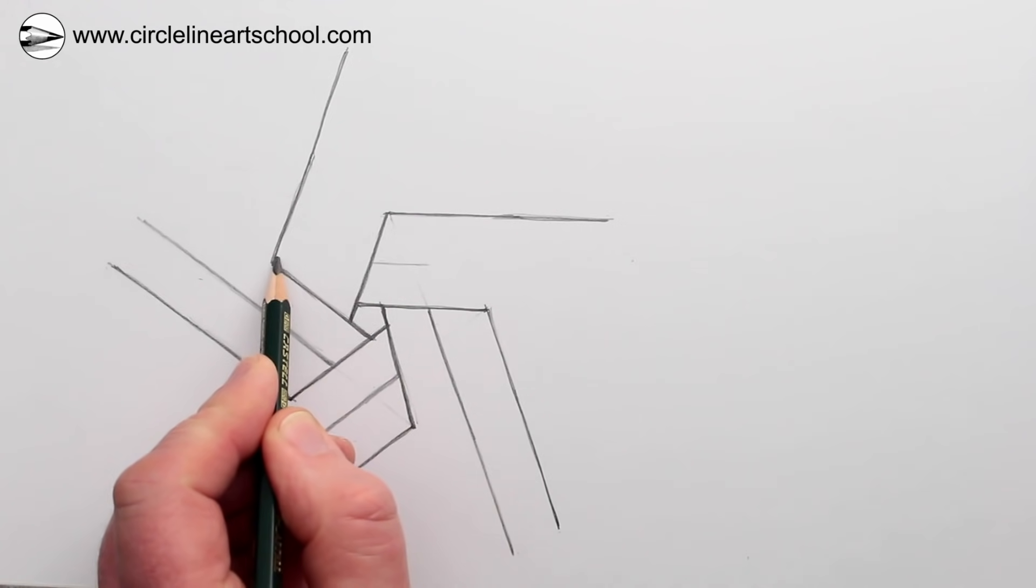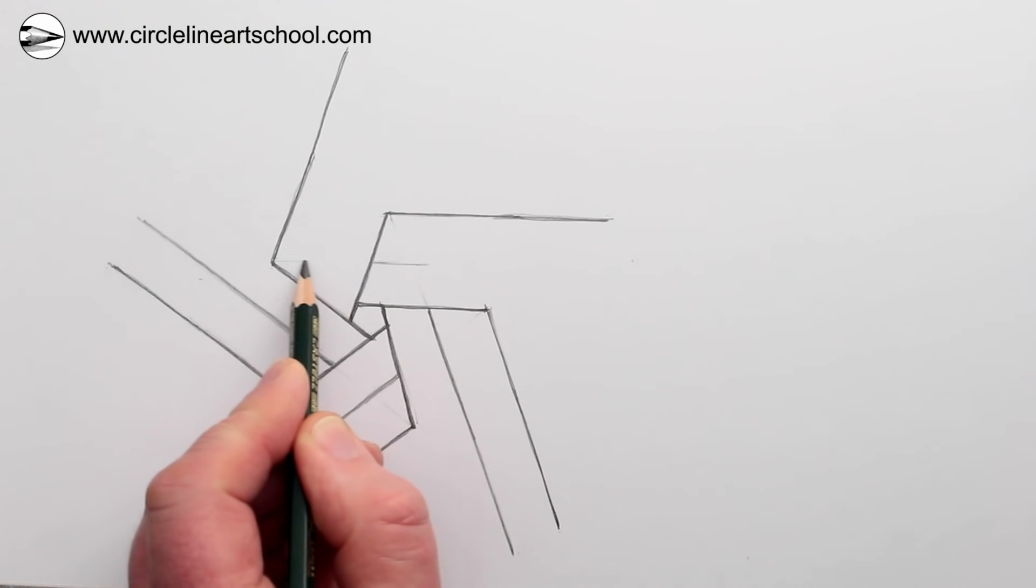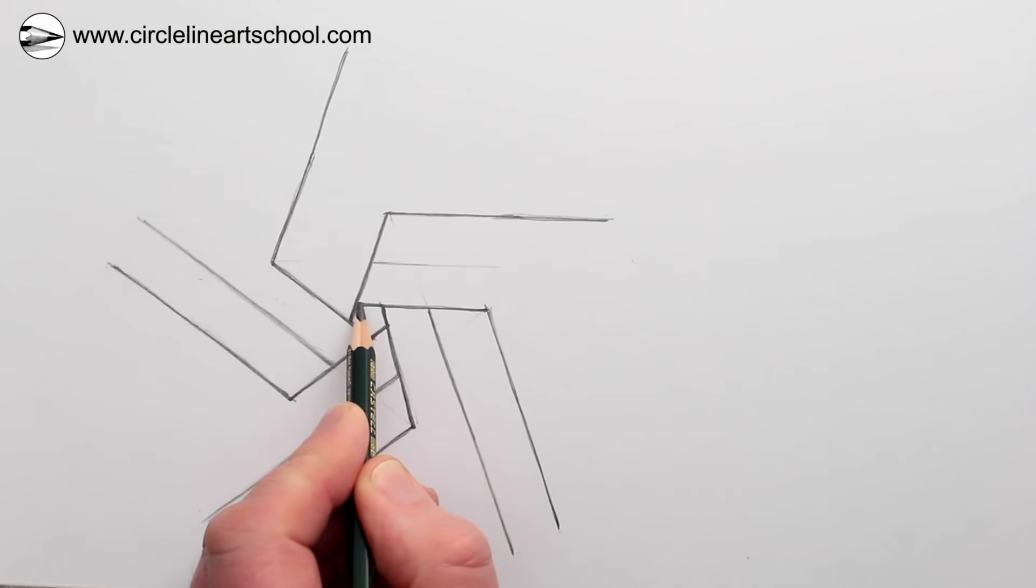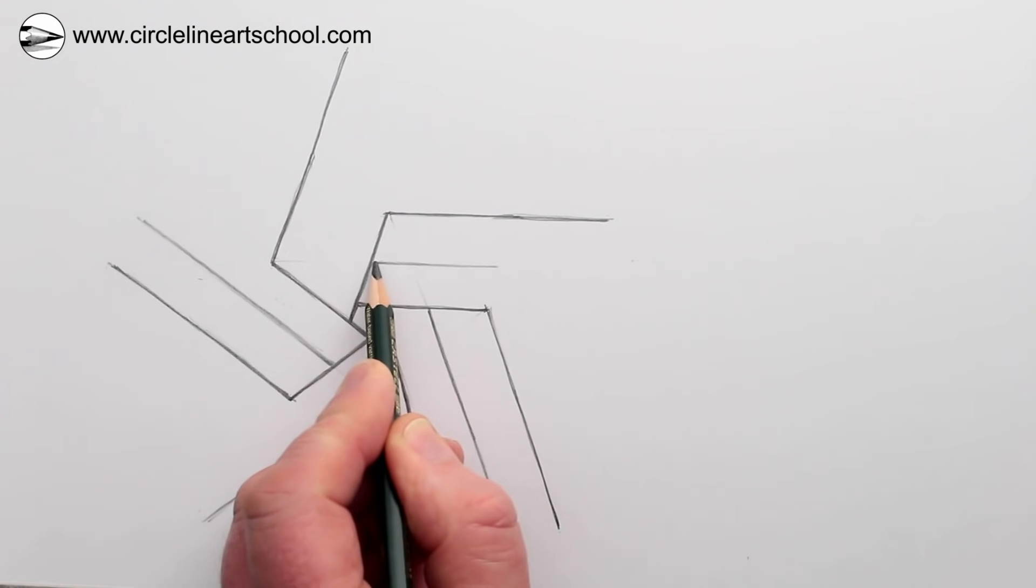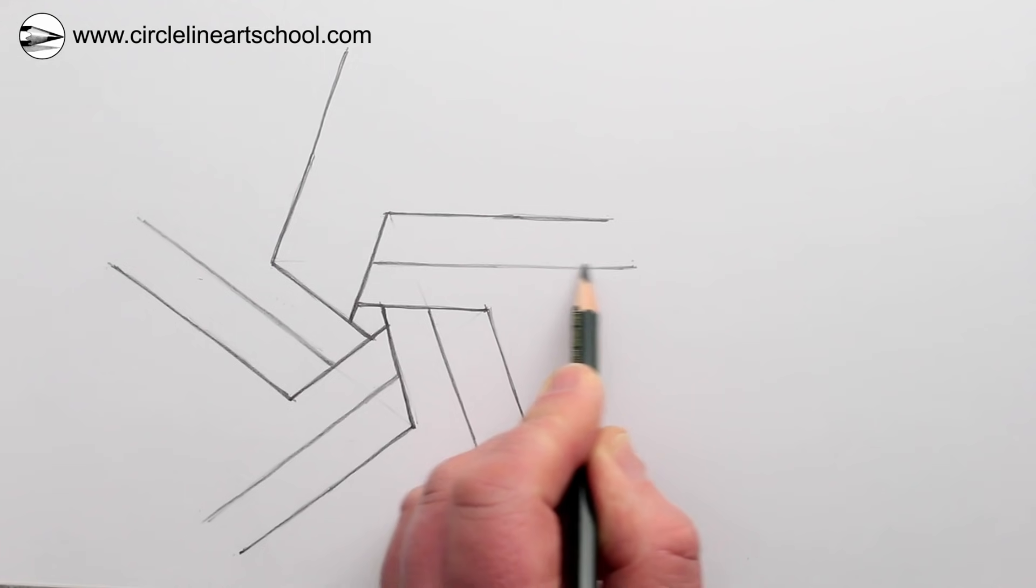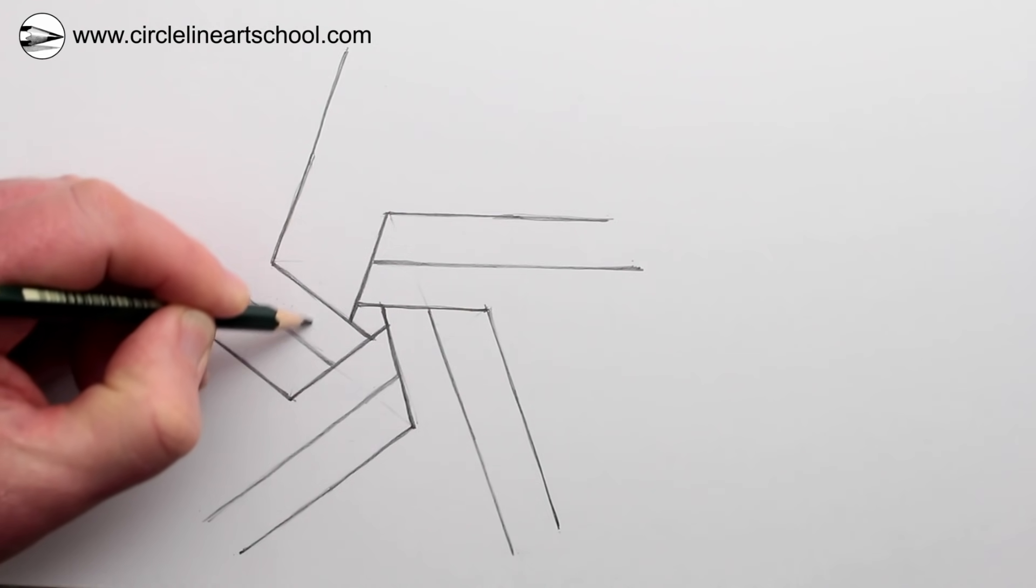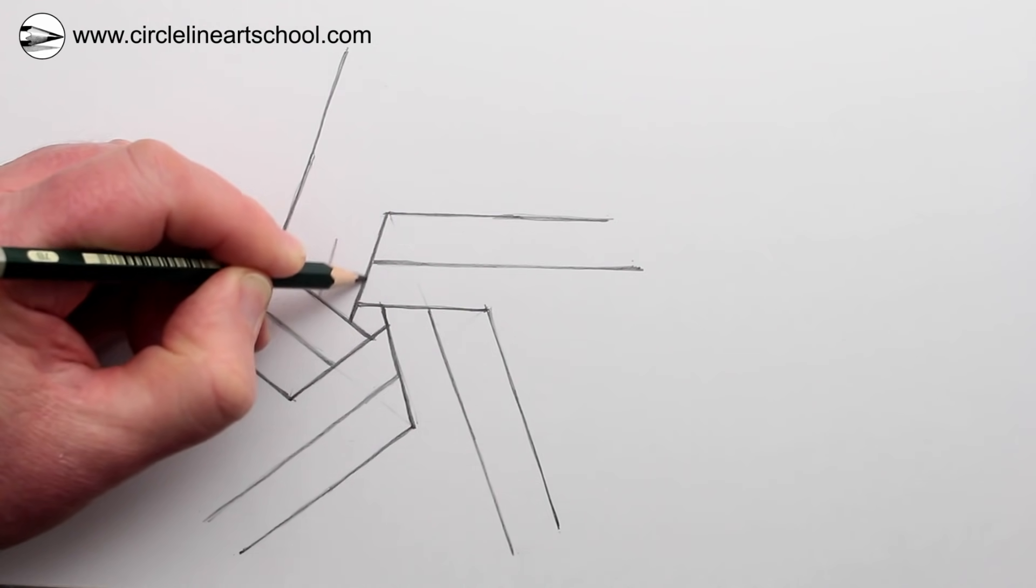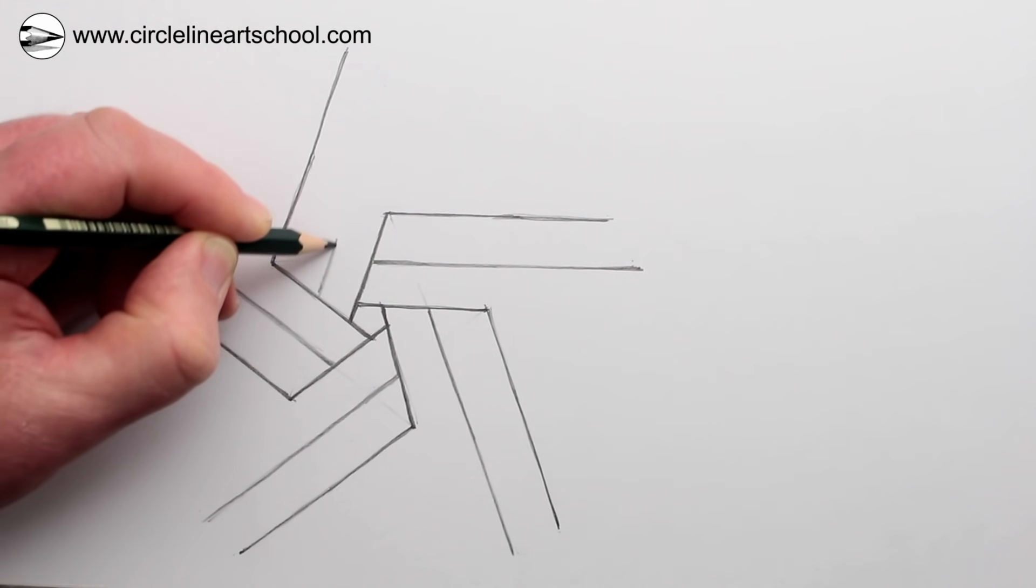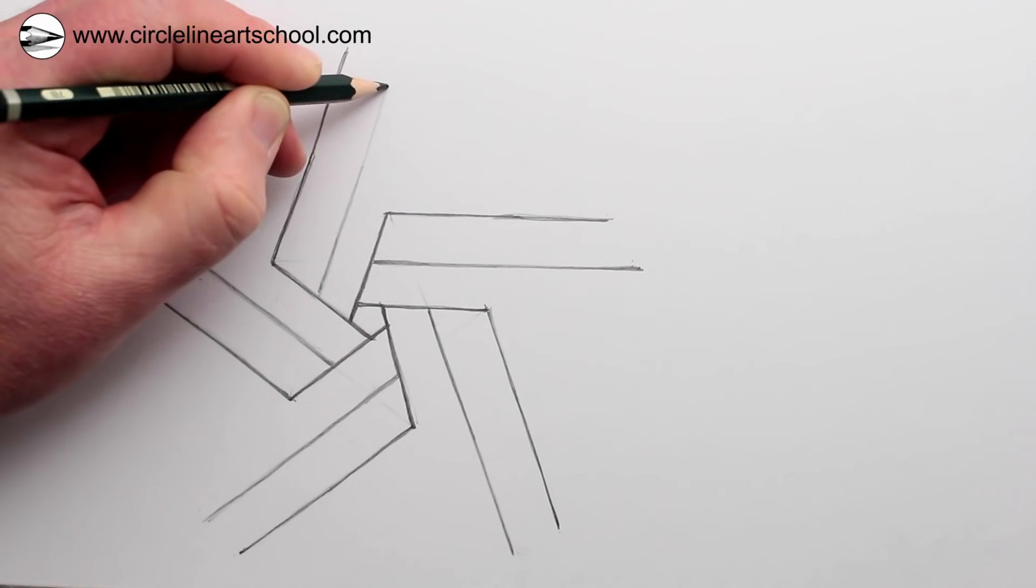So again, the bent line going along halfway between the two lines that we've got, and then the parallel line going along, which is a little bit longer than the line that is next to it. Now there's another one here, so again lining it up with the corner bent line, and then a parallel line, this time going upwards.